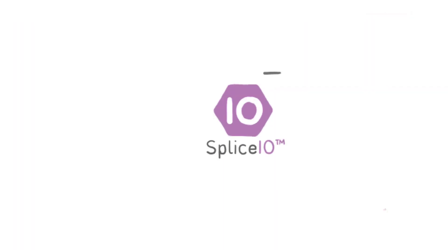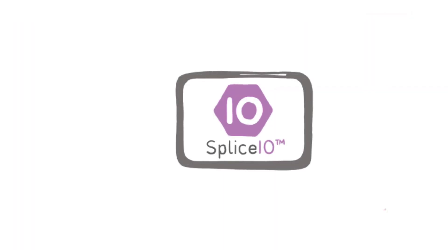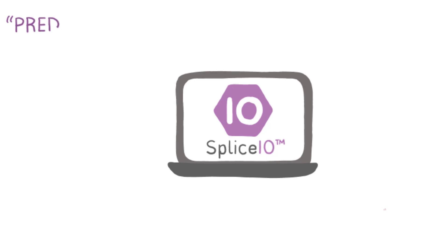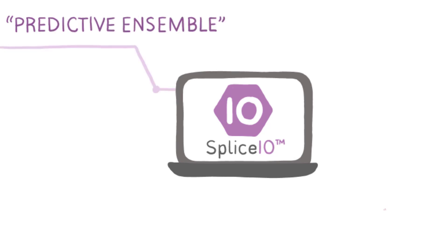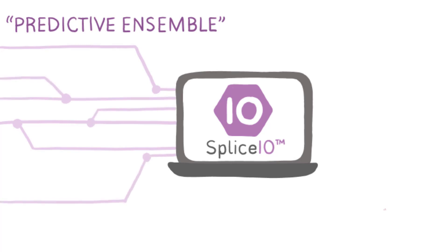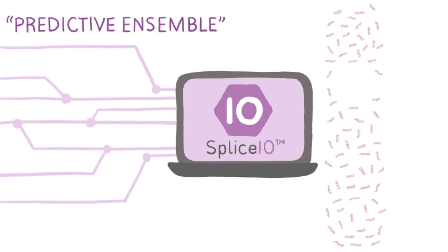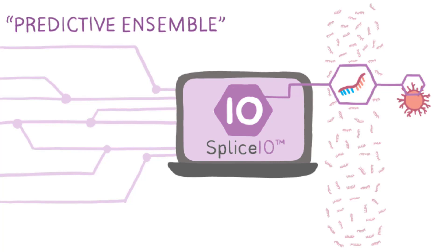The AI engine powering Splice.io is called a predictive ensemble. Predictive ensembles combine several machine learning algorithms that train and learn from different aspects of the input data. The combined insight of every algorithm helps Splice.io recognize a neoepitope-generating mRNA candidate when it sees one.